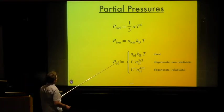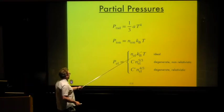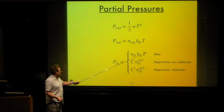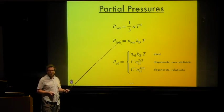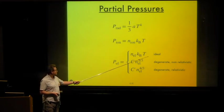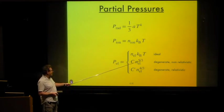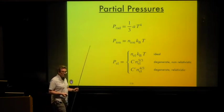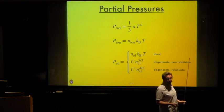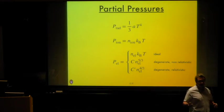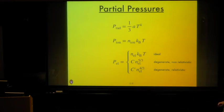For the Sun, the ideal gas expression is a pretty reasonable approximation for the electrons — as it is for most stars still burning hydrogen in their cores, apart from low-mass stars. We have to worry about the degenerate limits when thinking about stars turning into red giants and when thinking about white dwarfs, which are the degenerate remains of low-mass stars.